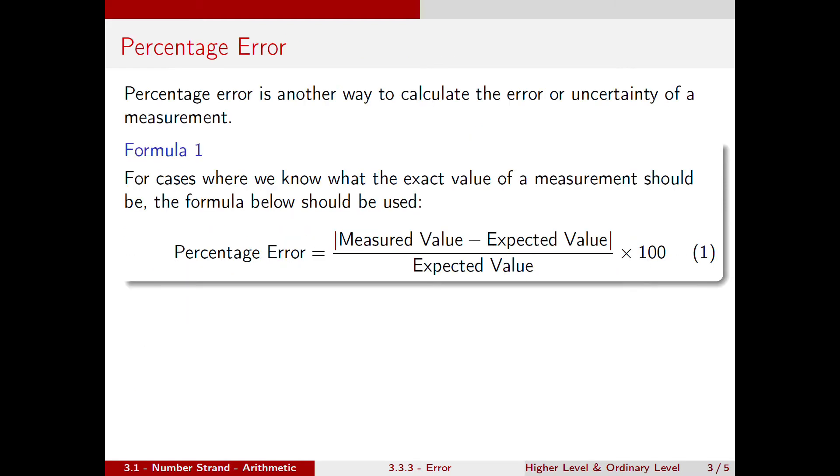This occurs in all types of measurements. Percentage error is another way to calculate the error or uncertainty of a measurement. For cases where we know what the exact value of a measurement should be, the formula below should be used.